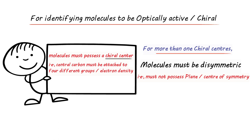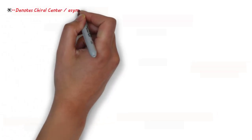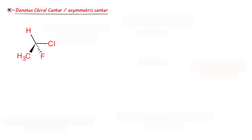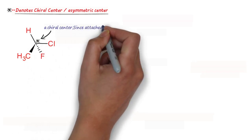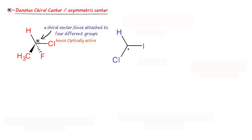Let's illustrate this with certain examples. The star denotes the chiral center or asymmetric center. In the first example, a carbon atom is attached to four different groups: hydrogen, chlorine, fluorine, and a methyl group. Since this center is attached to four different groups, it is a chiral center. In the second case, we have a carbocation — this carbon is attached to only three different groups or electron densities.